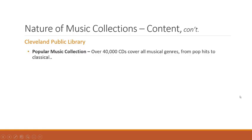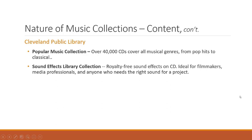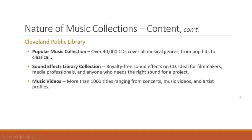The New York Public Library also has its own circulating music collection where you can check out sheet music, CDs and recordings — popular works as well as standards and classical works. It has full orchestra collections, choral operatics, solo vocal works, and 2,000 works in the standard orchestra repertoire. It has a music CD collection, spoken word CD collection, and downloadable music. Cleveland Public has a popular music collection of over 40,000 CDs and a sound effects library of royalty-free sound effects on CD — useful for amateur filmmakers, radio production, or making advertisements. It also has a thousand music video titles ranging from concerts, music videos, and artist profiles.